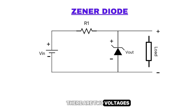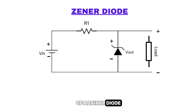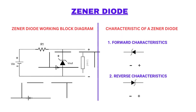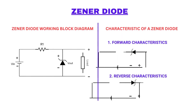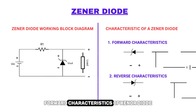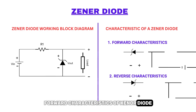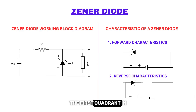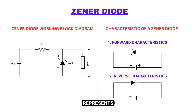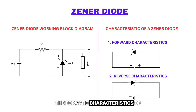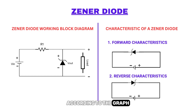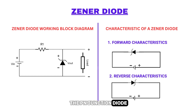There are two voltages and a current characteristic of a Zener diode. The first quadrant in the graph represents the forward characteristics of a Zener diode. According to the graph, the forward characteristics of the PN junction diode are nearly identical.